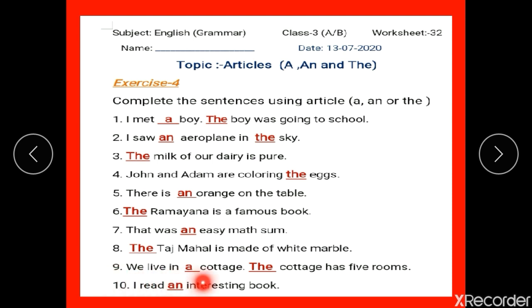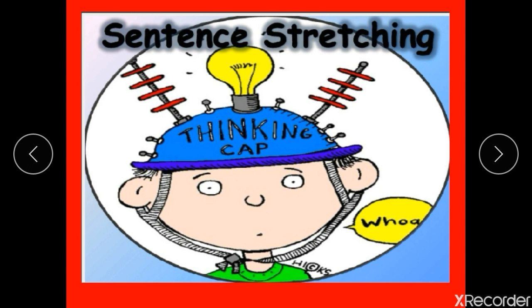Number 10: I read dash interesting book. IE is the vowel sound, so we write 'an interesting book'. Now let's move on to today's exercise — Sentence Stretching.